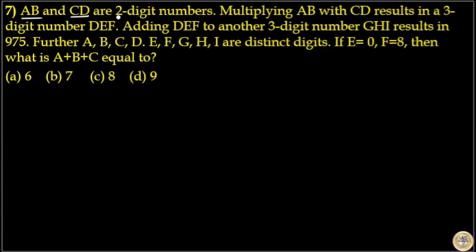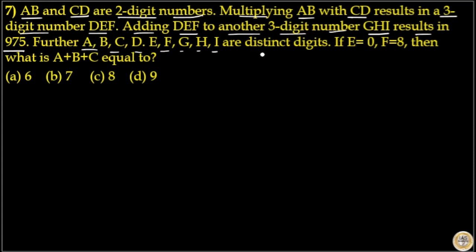AB and CD are two-digit numbers. Multiplying AB with CD results in a three-digit number DEF. Adding DEF to another three-digit number GHI results in 975. Further, A to I are distinct digits. If E is equal to zero and F is equal to A, then what does A plus B plus C equal?